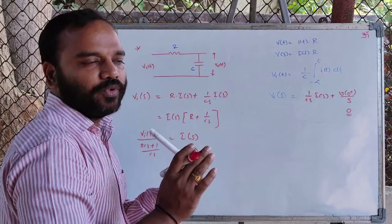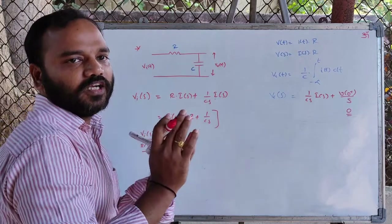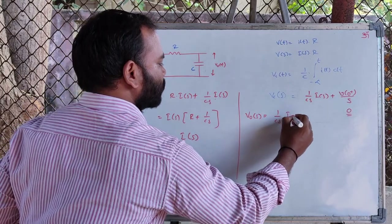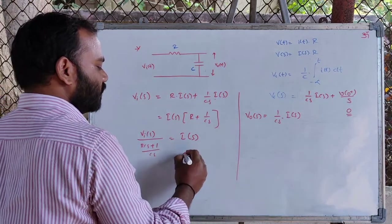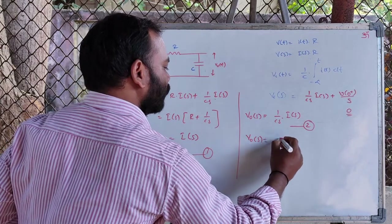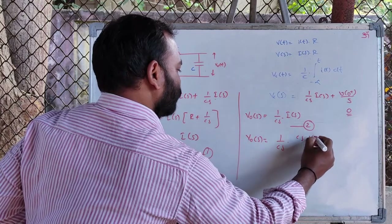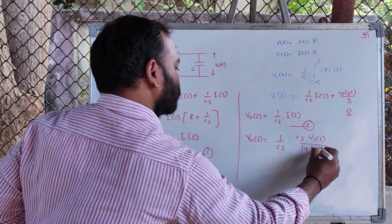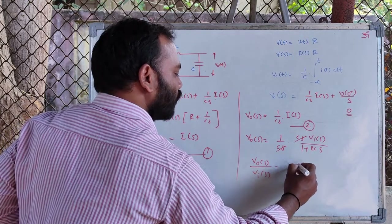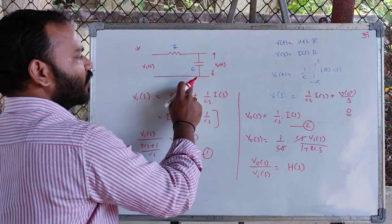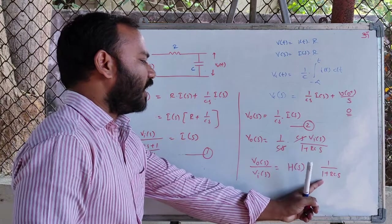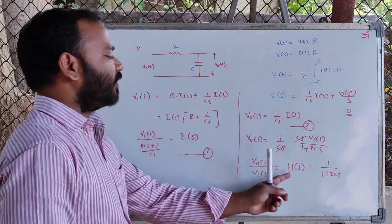We are interested in computing the voltage across the capacitor — the filtered output voltage. Vo(s) = (1/Cs) × I(s), where I(s) is given by equation 1. Substituting into equation 2, we get Vo(s) = (1/Cs) × Cs × Vi(s) / (1 + RCs). Therefore, Vo(s)/Vi(s) = H(s), the transfer function of this first-order low-pass filter, equals 1 / (1 + RCs). This is the transfer function of the first-order analog low-pass filter expressed in the Laplace domain.